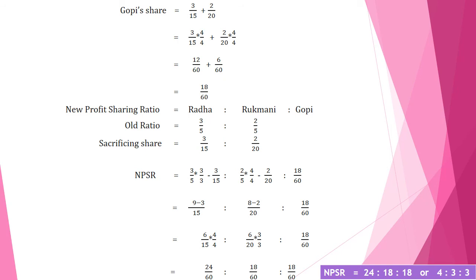Gopi's new share = 3/15 + 2/20. Making equivalent fractions: 12/60 + 6/60 = 18/60. For the old partners' new ratio, we calculate old ratio minus sacrificing share. For Rada: 3/5 − 3/15 — multiply 3/5 by 3/3 to get 9/15, then 9/15 − 3/15 = 6/15. For Rukmani: 2/5 − 2/20 — multiply 2/5 by 4/4 to get 8/20, then 8/20 − 2/20 = 6/20.